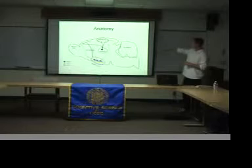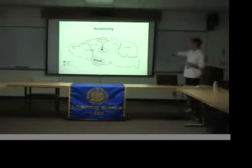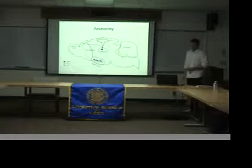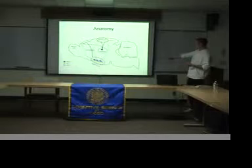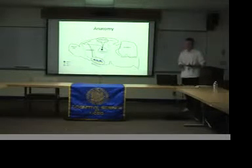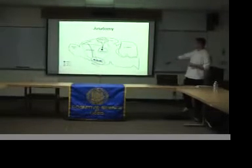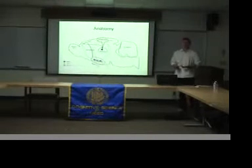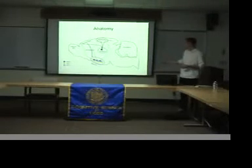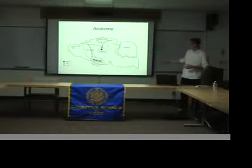The basal forebrain also receives input from the prefrontal cortex, depicted here as a black arrow, and a variety of other cortical regions. Additionally, the population of basal forebrain neurons is very heterogeneous — it's actually made up of neurons of different types. There are neurons that correspond to different neurotransmitters, depicted here as blue, green, and pink, which are GABAergic, glutamatergic, and cholinergic neurons.